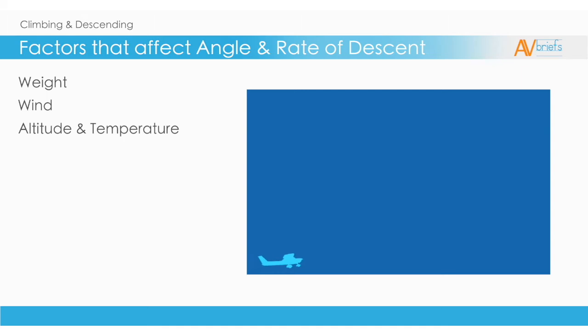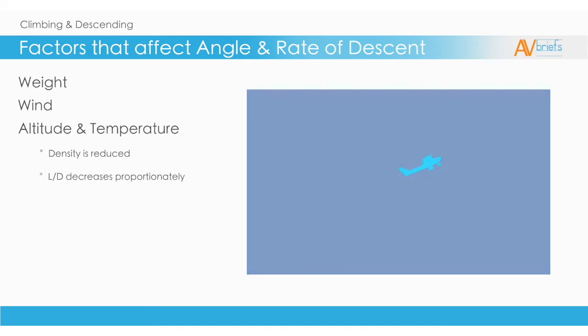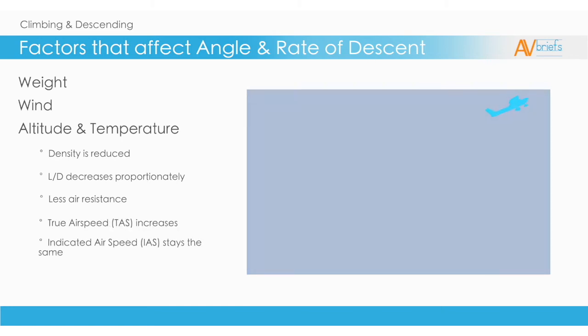Altitude and Temperature: at higher altitudes and temperatures, the air density is reduced. Less dense air contains less air particles and so it gives less performance in creating lift. The lift-to-drag ratio decreases proportionately, so as they both reduce at the same rate, the actual ratio is unaffected. There is less air resistance and the true airspeed increases. This means you travel faster through the air. Your indicated airspeed stays the same because you are passing through less dense air, so you will still travel at the same speed on the airspeed indicator, but you will be going through more air to get that speed.